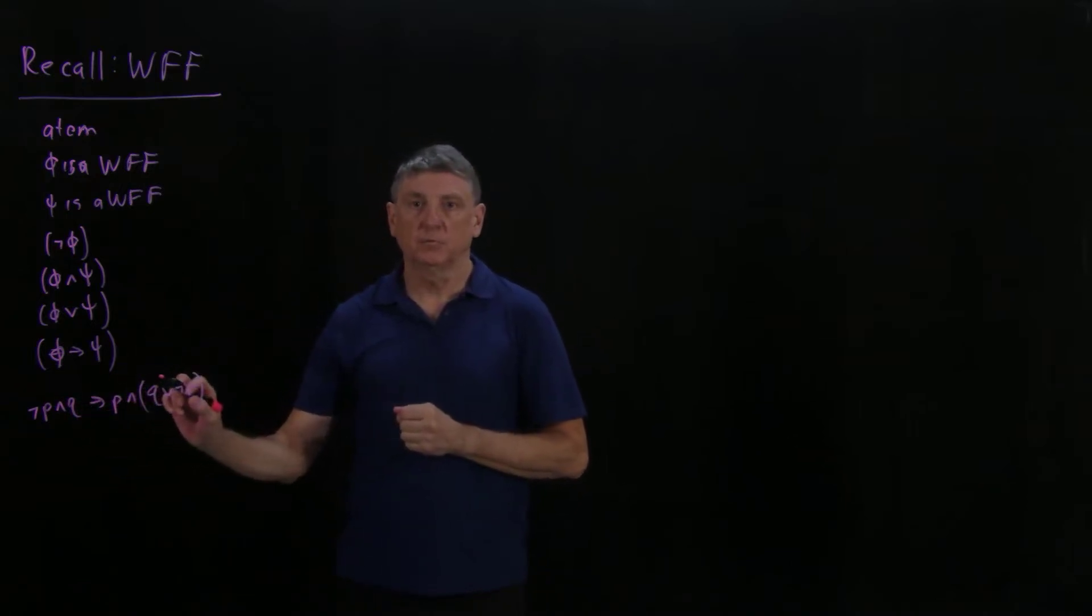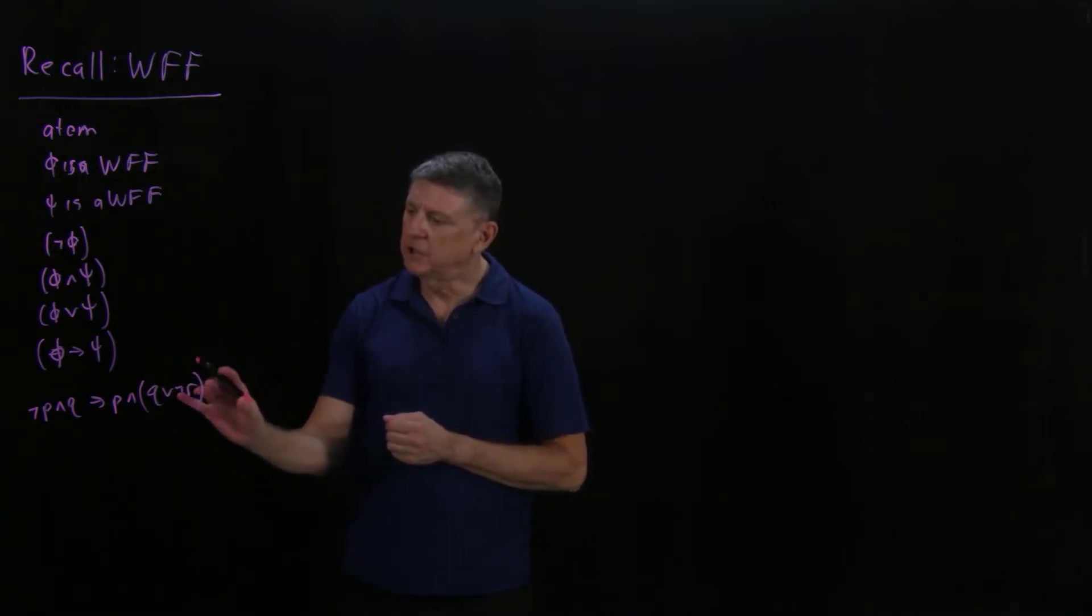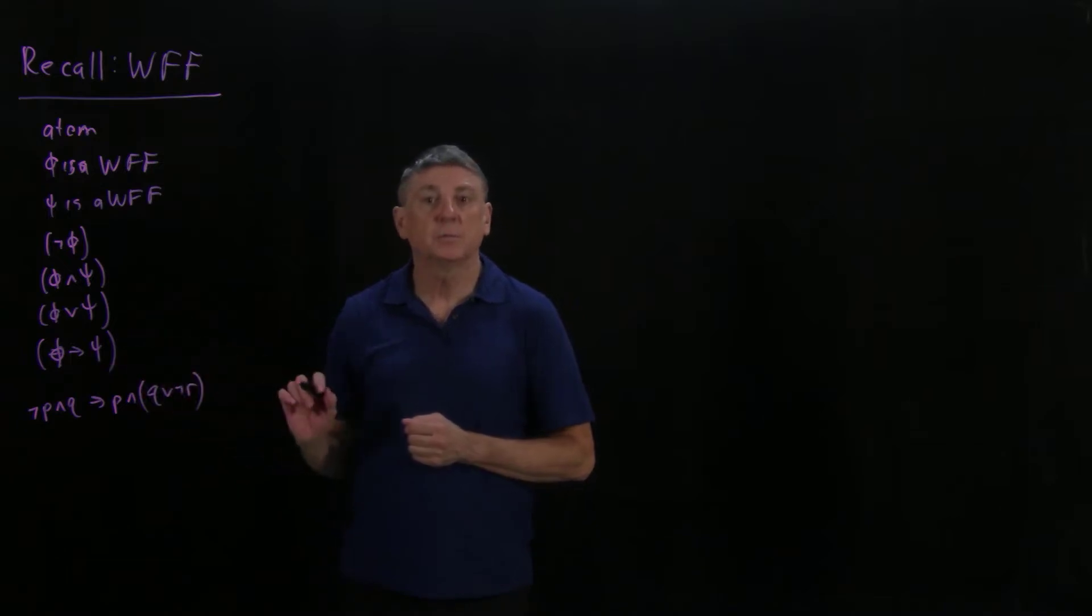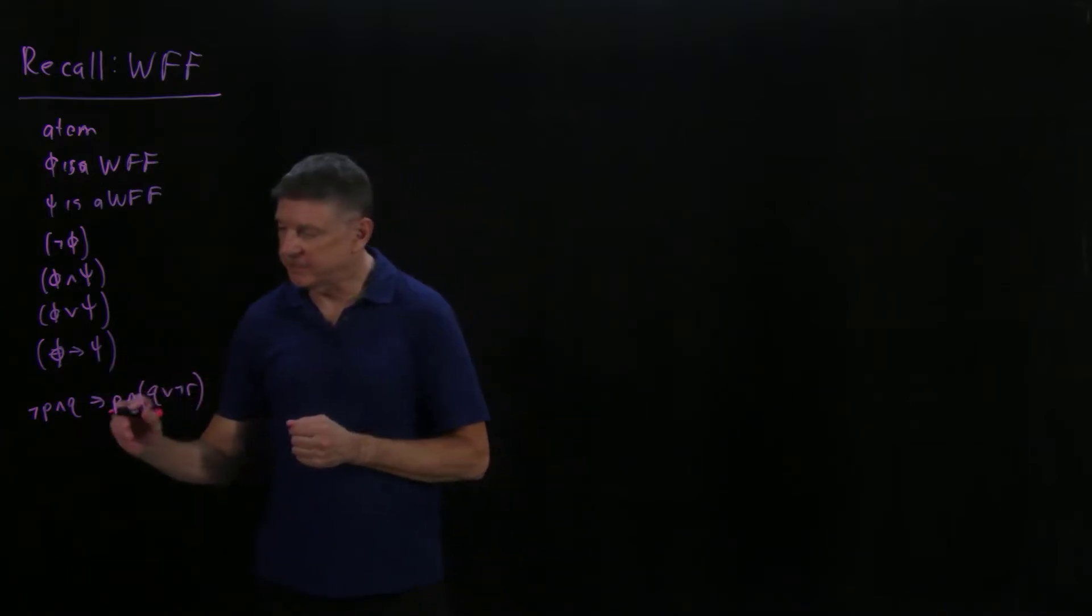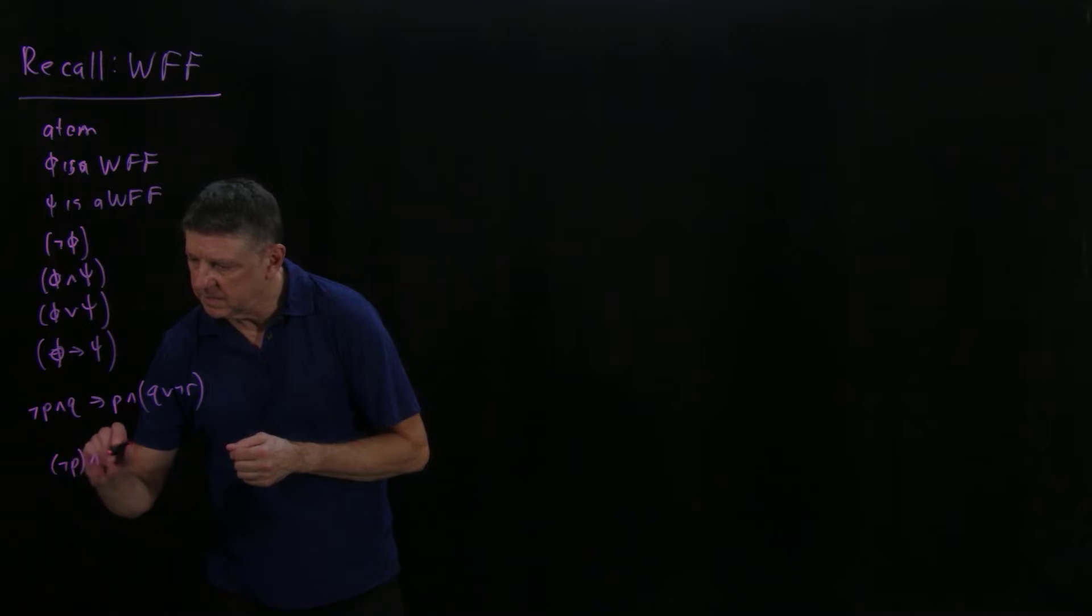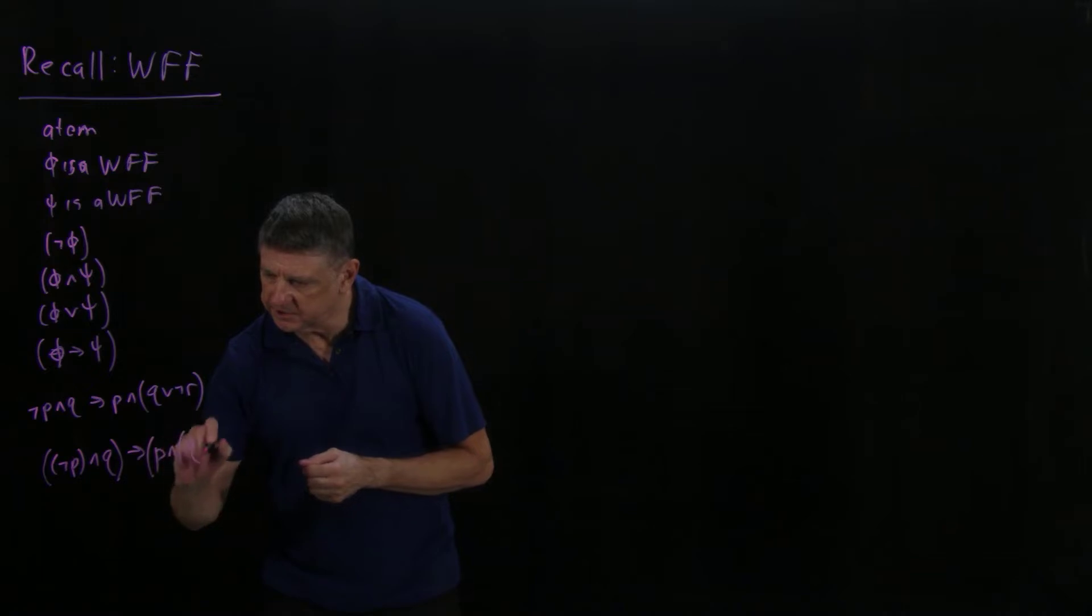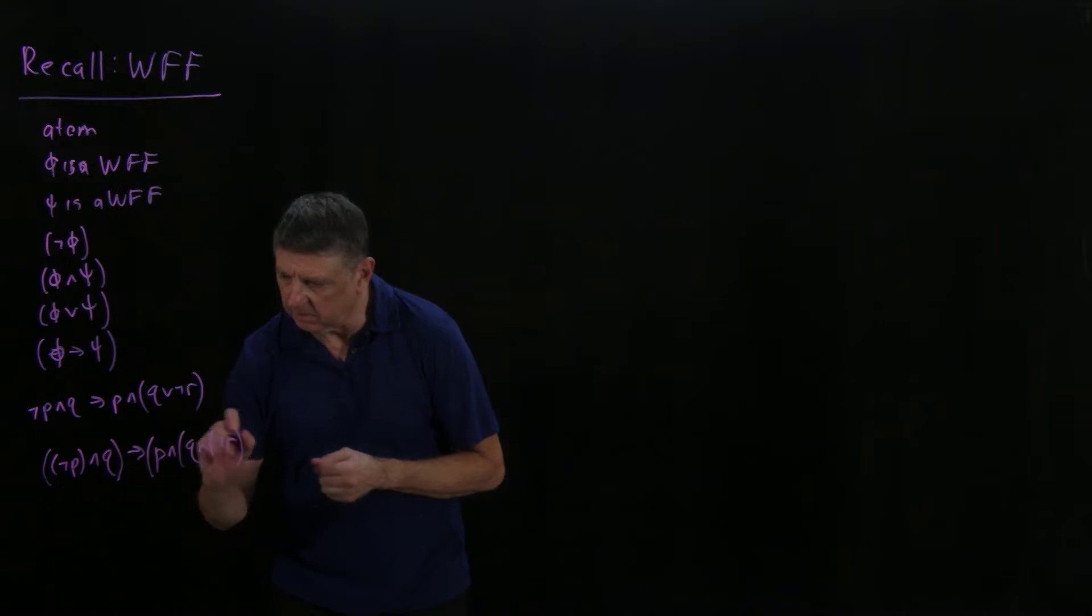To make it into a well-formed formula, we need to introduce all of the relevant parentheses and not take into account the bindings that we've been using in other sessions. So as a well-formed formula, this would be the negation of p and q implies p and the disjunction of the negation of r.